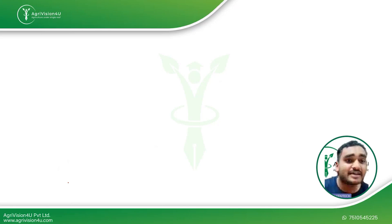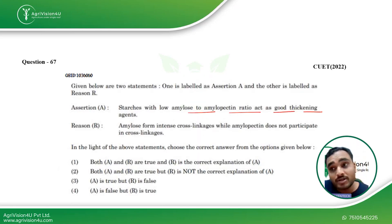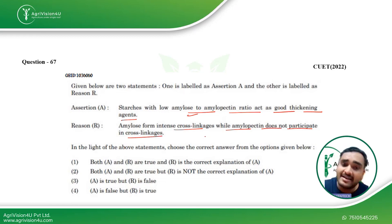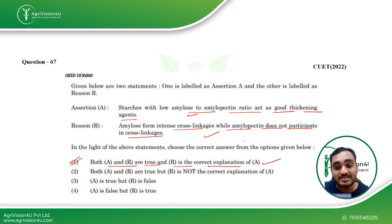The next assertion-reason question: starches with low amylose to amylopectin ratio act as good thickening agents — this is true. The reason: amylose forms intense cross-linkages while amylopectin does not participate in cross-linkages — also true, and it correctly explains the first statement. So option one is the right answer: both assertion and reason are true and reason is the correct explanation of assertion.